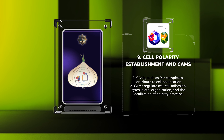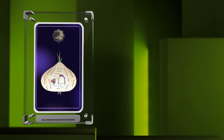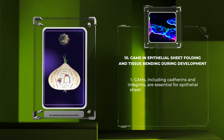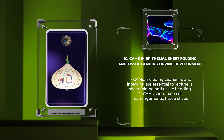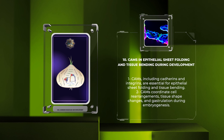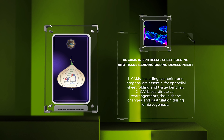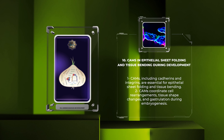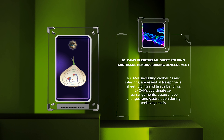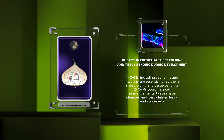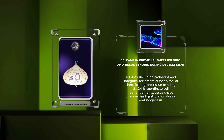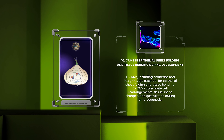Epithelial sheet folding and tissue bending are fundamental processes during embryogenesis. CAMs, including cadherins and integrins, are essential for coordinating cell rearrangements, tissue shape changes, and gastrulation. Dynamic changes in CAM expression and localization enable coordinated tissue remodeling, leading to the formation of complex tissue structures during development.